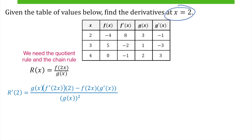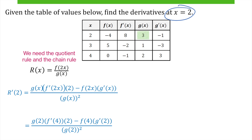Again, we're going to find the derivative at x equals 2, so we're going to plug in 2 for all of those. Glancing up and back at the table, we need to find g of 2, f prime of 4, f of 4, g prime of 2, and g of 2 again. Then we can plug in each of those values and simplify.